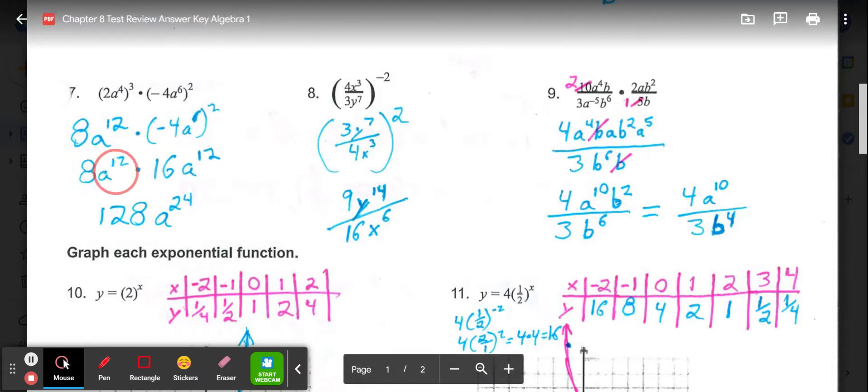So we end up with 8a to the 12th times 16a to the 12th. Multiply the 8 and 16 out in front for 128, and then add the powers. So we have 128a to the 24th.